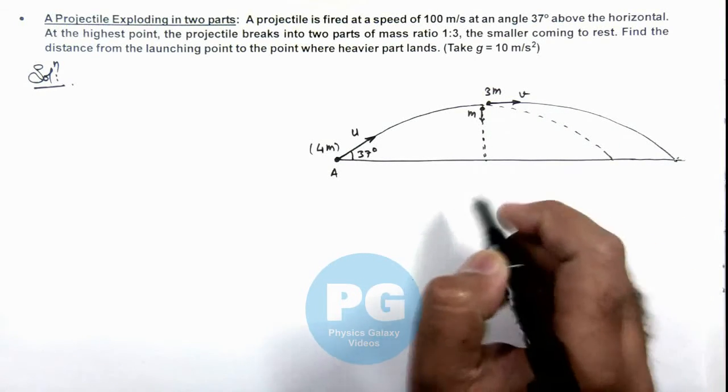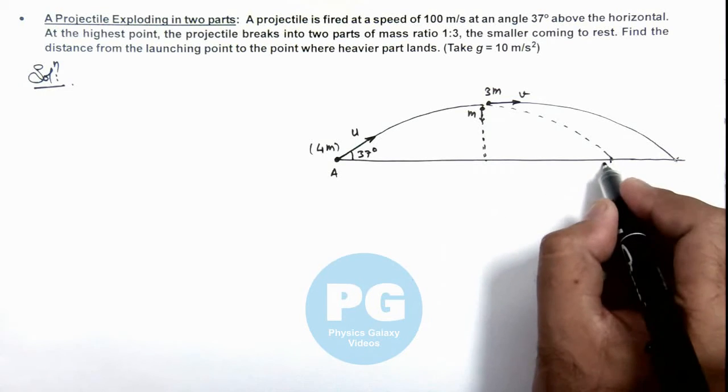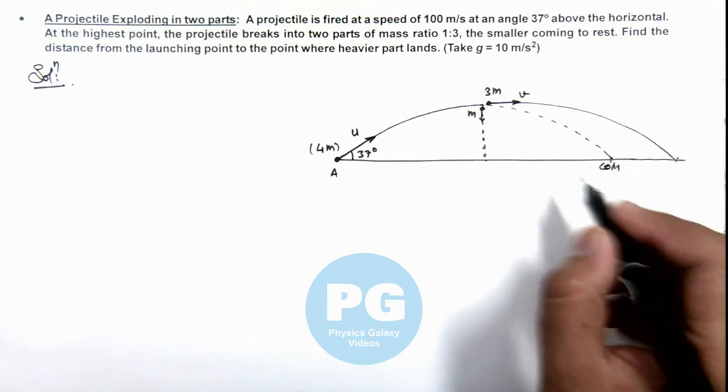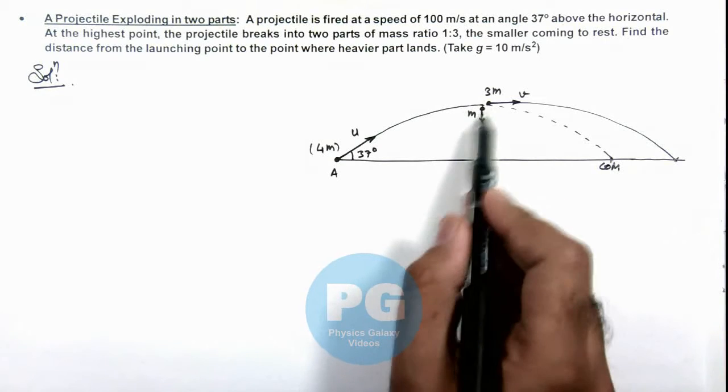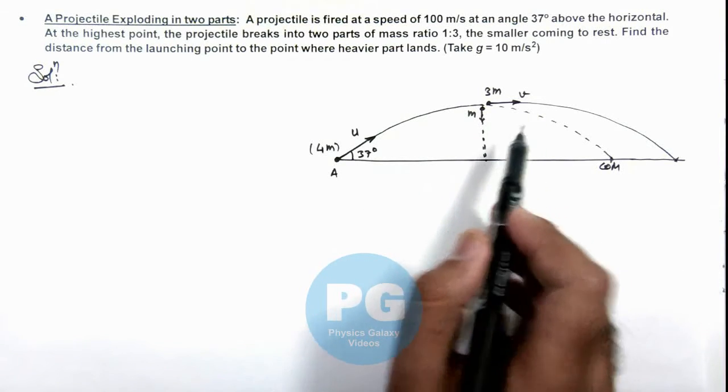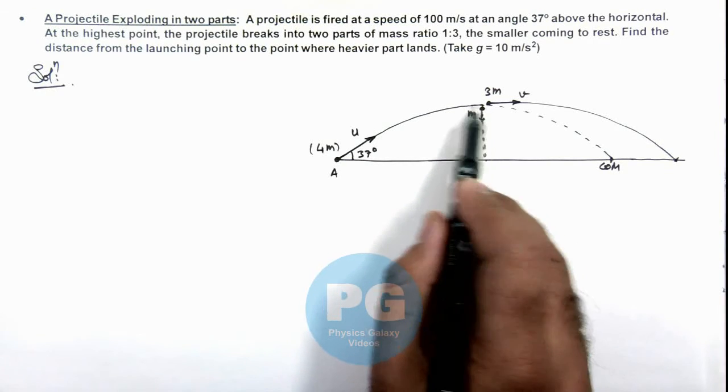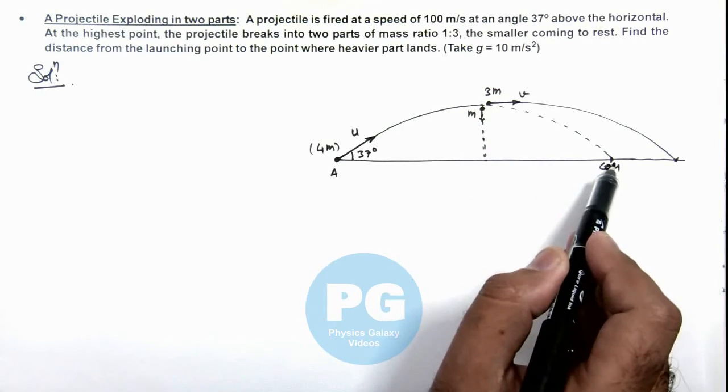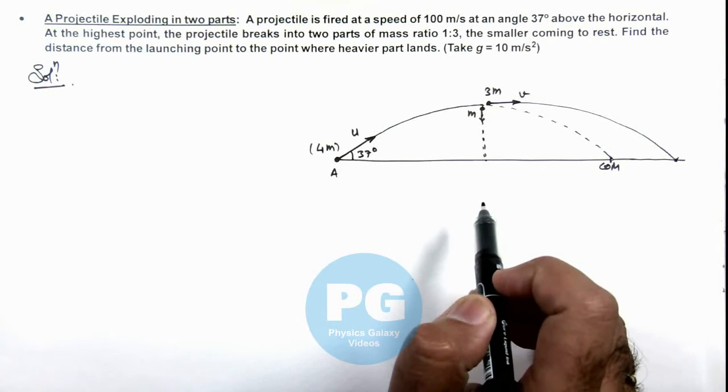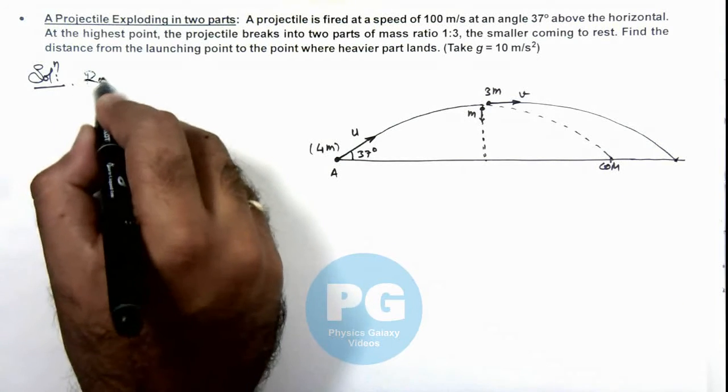So this is the point where we can say the center of mass of this system will land, because even after explosion we can say no external horizontal force is acting on this system. So center of mass of these 2 parts of projectile will still follow the same trajectory and finally land over here. So first we can calculate the range of projectile.